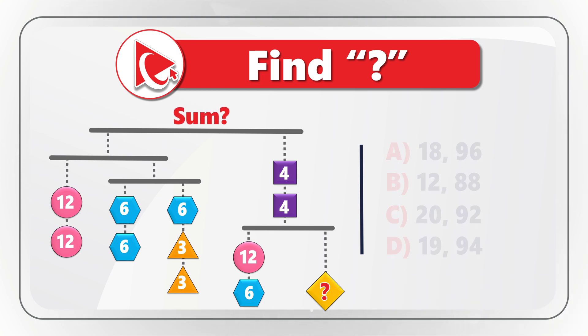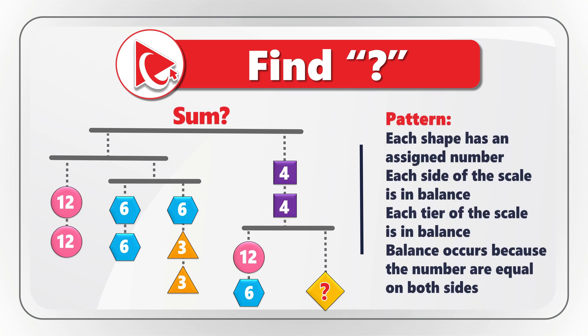To solve this challenge, let's look at the picture closely to better understand what we're dealing with. We're presented with the multi-tier scale. And this scale has four tiers: Tier 1, tier 2, tier 3, and tier 4. Scale remains in balance because values on the left side and on the right side are equal. And the values are represented by the total of numbers inside of each shape.